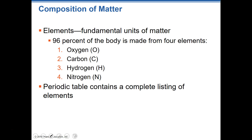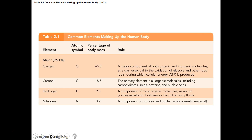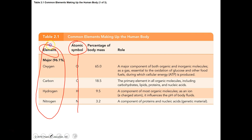The atomic symbols used for elements are derived from the Latin term for those elements — usually the first letter or two of that Latin term. So the symbol may not perfectly match the English element name, which can cause some confusion. For example, looking at the other elements that make up the remaining roughly 4% of the body: calcium, phosphorus, potassium, and sulfur. Potassium's symbol is K because the Latin word for potassium starts with a K.